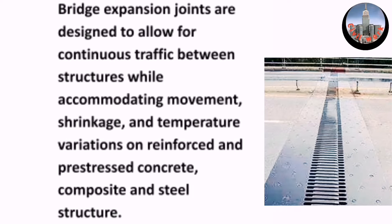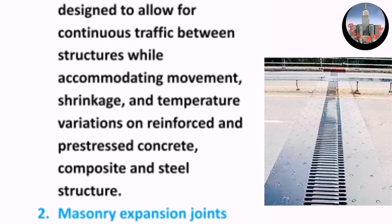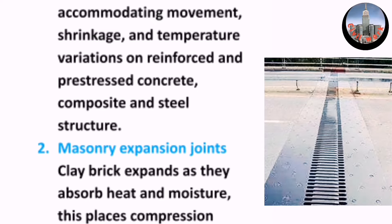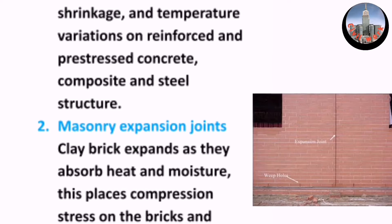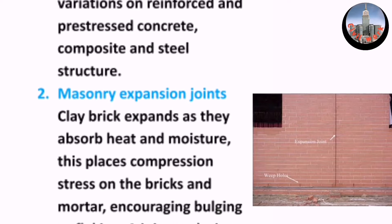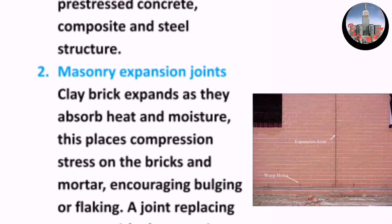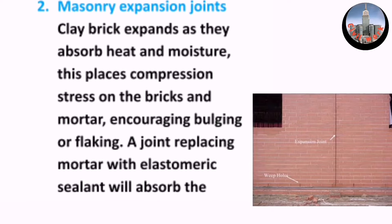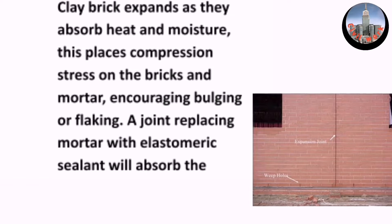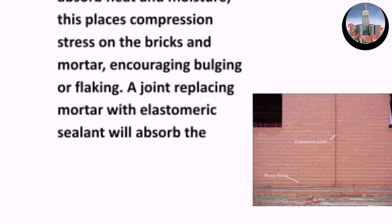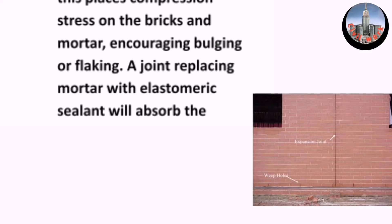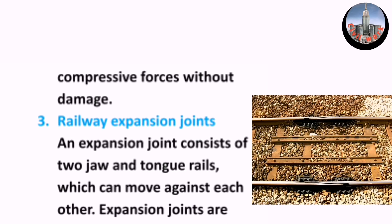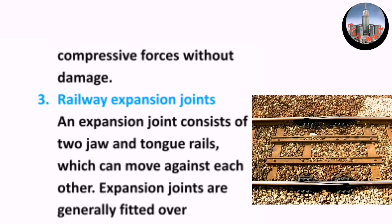Bridge expansion joints accommodate movement, shrinkage, and temperature variation on reinforced and pre-stressed concrete, composite, and steel structures. Two, masonry expansion joints — clay bricks expand as they absorb heat and moisture, placing compressive stress on the bricks and encouraging bulging or flaking. A joint replacing mortar with elastomeric sealant will absorb the compressive forces without damage.